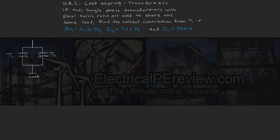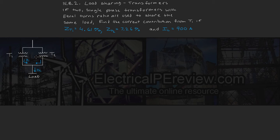Looking at our equivalent circuit, we have IL going to the load, I1 which is the current contribution from transformer 1, and I2 which is the current contribution from transformer 2. We have a transformer with Z1% impedance and a transformer with Z2% impedance.